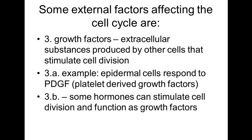Environmental conditions like temperature, pH, and nutrition also influence the cell cycle. Growth factors are extracellular substances produced by other cells that stimulate cell division — they come from outside the cell being affected. One example: epidermal cells — cells of the skin, the dermis and those producing the epidermis — respond to platelet-derived growth factors. Platelets are cell fragments found in the bloodstream whose main job is to clot blood, yet these fragments release chemical agents that are transmitted to the epidermis and affect cell division there.